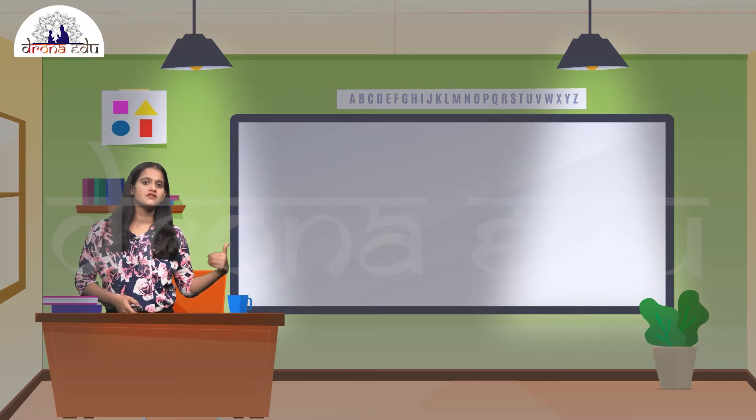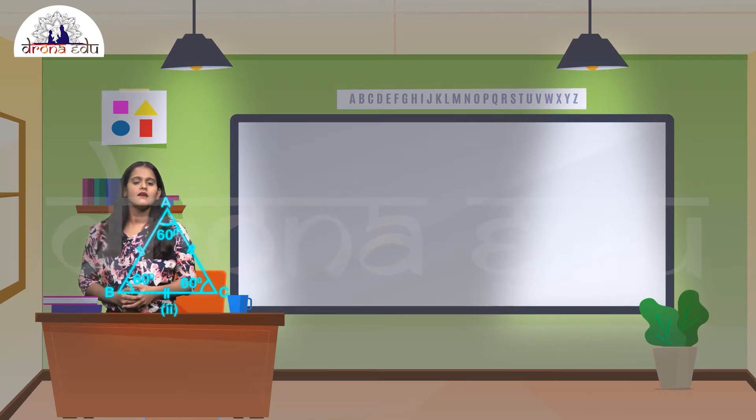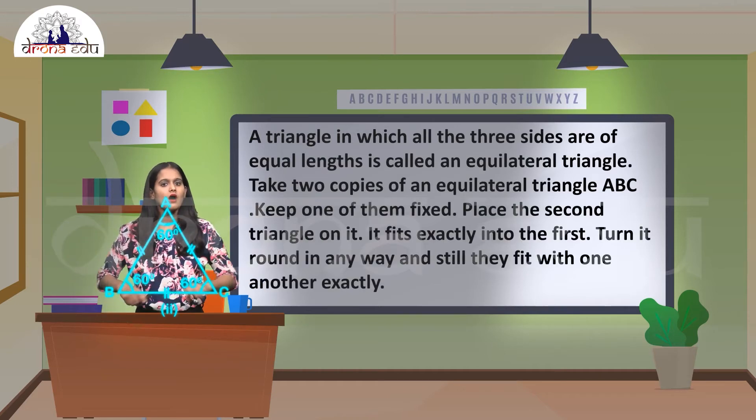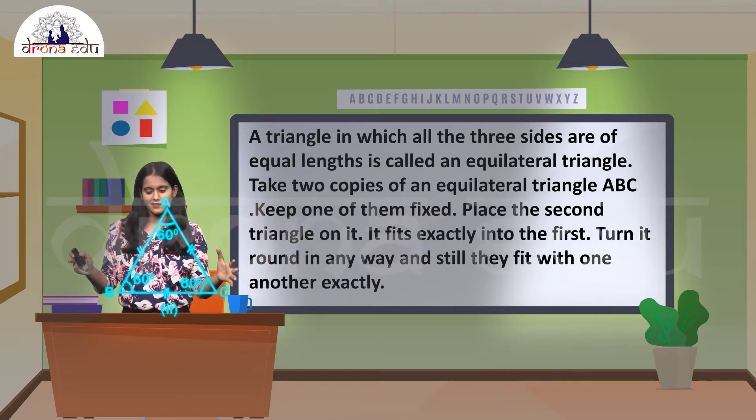Let's see two special triangles: equilateral and isosceles triangles. A triangle in which all three sides are equal in length is called an equilateral triangle, like this.